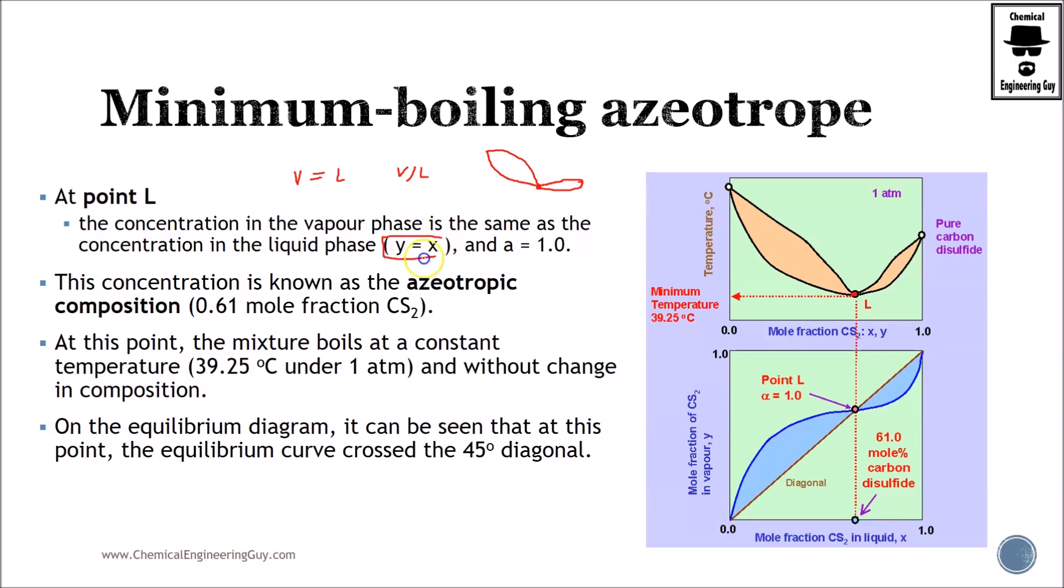What is true? y equals x. So ya will be equal to xa, meaning that the composition in the liquid and vapor phases are the same. And if that is true, the driving force will not be enough to carry out this separation via distillation. This concentration is known as the azeotropic composition. What is the composition in the azeotrope? Yeah, the composition is found here.